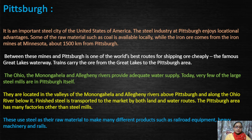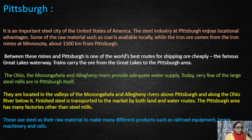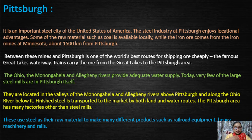Steel mills are established in Pittsburgh. Today, there are very few steel mills, which are located in the valleys of the Monongahela and Allegheny rivers above Pittsburgh and along the Ohio River. Finished steel is transported to the market both by land and water routes.